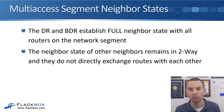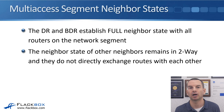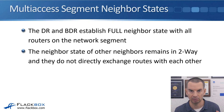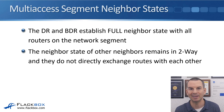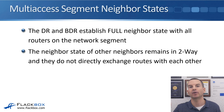The DR and BDR establish full neighbor state with all routers on the network segment. The neighbor state of other routers remains in a two-way state, and they do not directly exchange routes with each other. For example, if R1 is the DR and R2 is the BDR, then R1 and R2 go to the full state with all other routers. R3 and R4 go to the full state with R1 and R2, but the state between R3 and R4 remains two-way since neither is a designated router. R3 and R4 will still learn each other's routes because those will be reflected down from the DR.